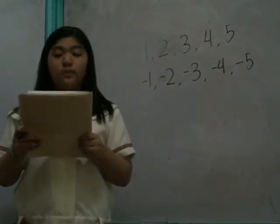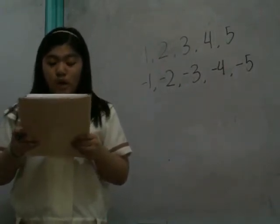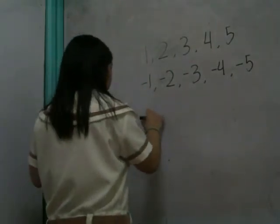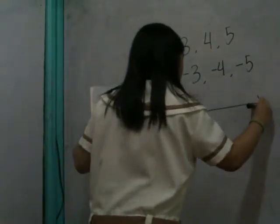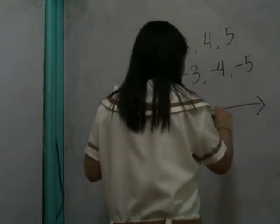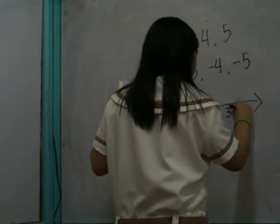On a horizontal number line, positive integers are to the right of zero: 1, 2, 3, 5.